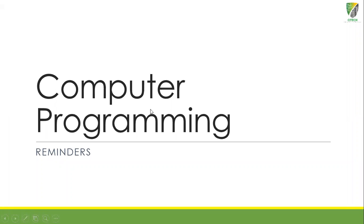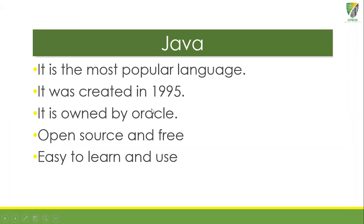Computer Programming Reminders. Java is one of the most popular languages in the world right now, along with JavaScript and Python. It was created in 1995. It is owned by Oracle. It is open source and free — that's why we're using Java right now. It is also easy to learn and use.